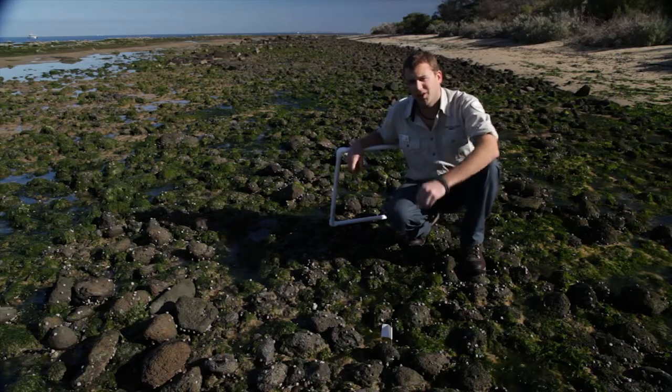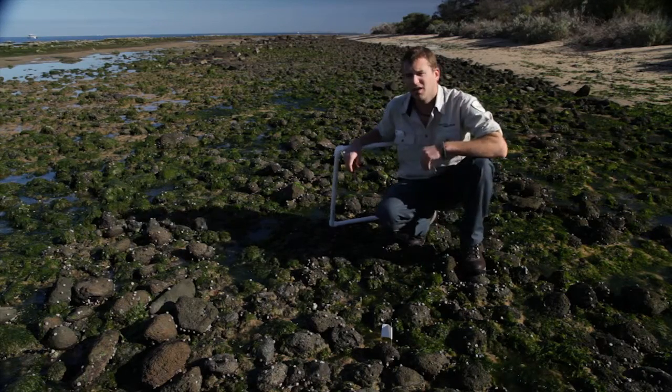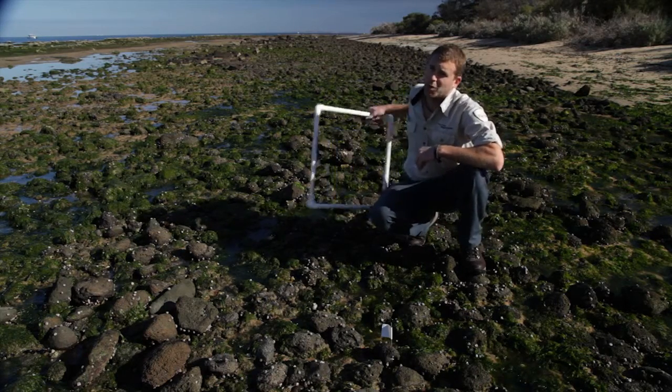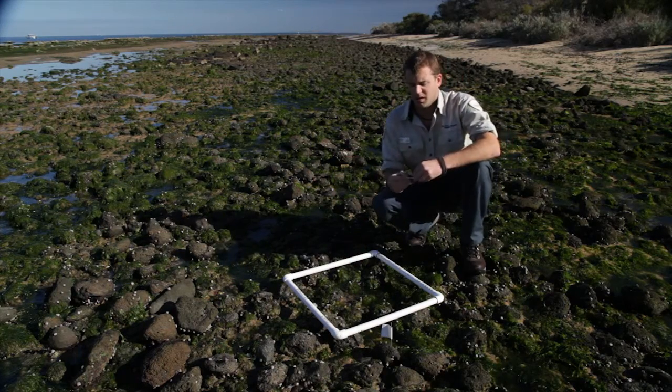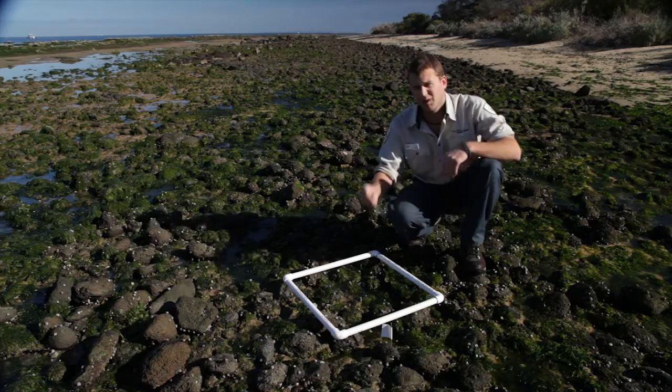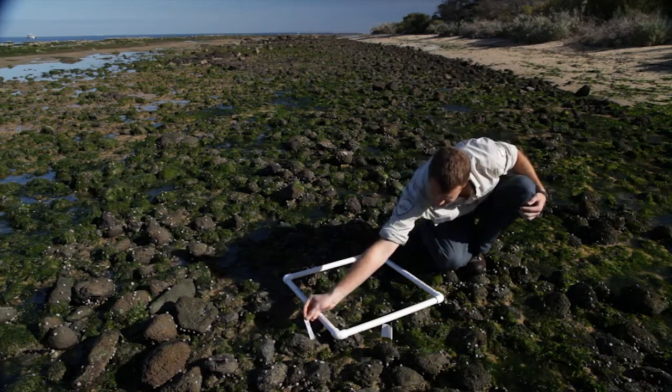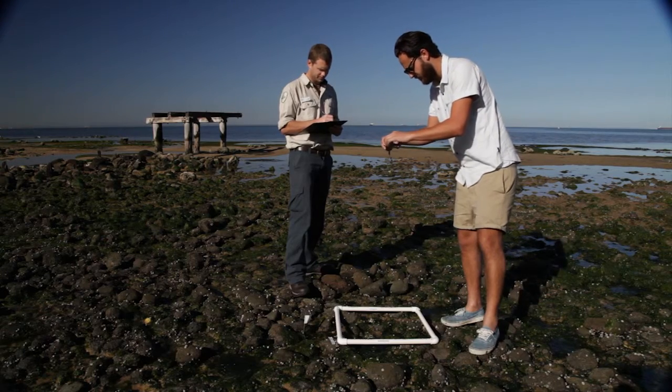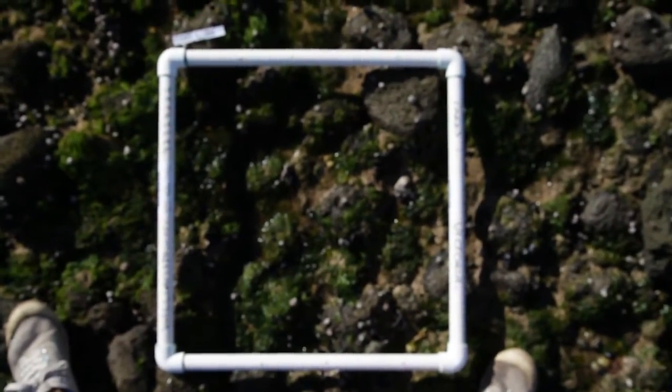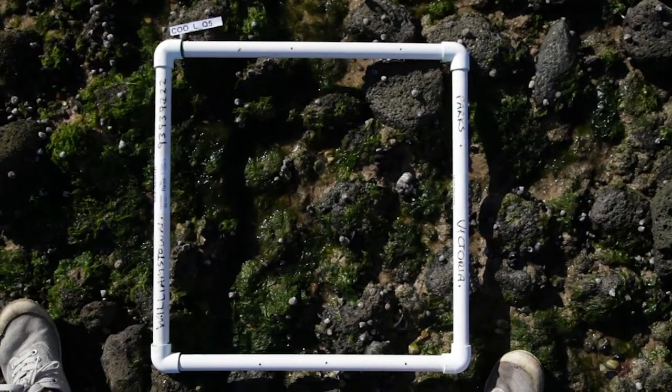Using the quadrat placement marker your ranger has already set out for you as a guide, place the open quadrat on the reef. Place the quadrat photo label above the top left hand corner. Take a photo of the quadrat from directly above. Make sure everything is in focus and you've got the entire quadrat plus the label in the frame.